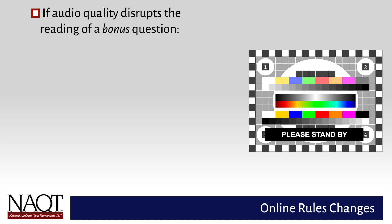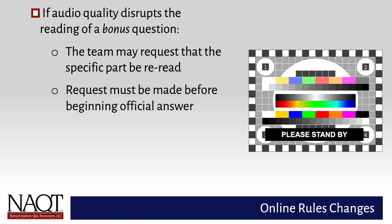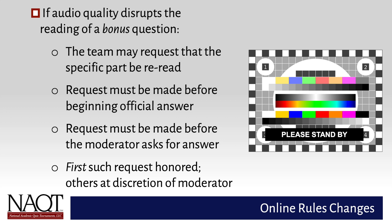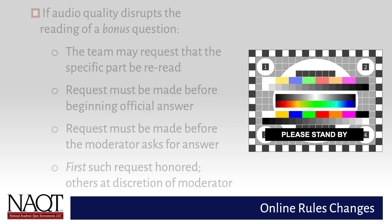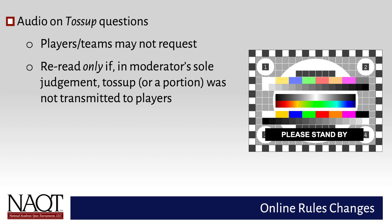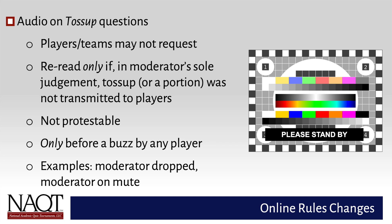If, during a bonus question, a team is unable to hear part or all of the question part being asked due to audio quality issues, that team may request that the current bonus part be re-read. The request must be made prior to the team giving its official answer and before being asked to begin the answer by the moderator. The first such request per team in each game will always be honored. Additional requests are at the moderator's discretion. On a toss-up question, neither team may request a re-reading due to audio quality, but the moderator may re-read part or all of a toss-up if, in their sole judgment, a technical issue or other error prevented part or all of the question from being transmitted in a comprehensible form to the players. This determination, which is not protestable, must be made before either team has signaled and only if the moderator has a specific reason to suspect the issue. Players' assertions alone are not sufficient.